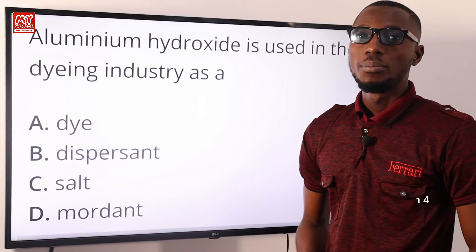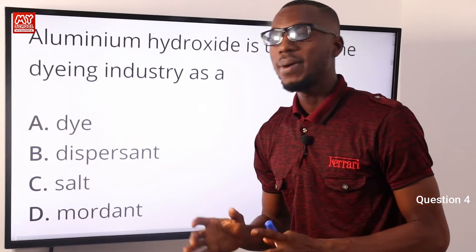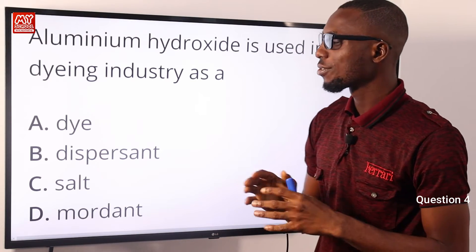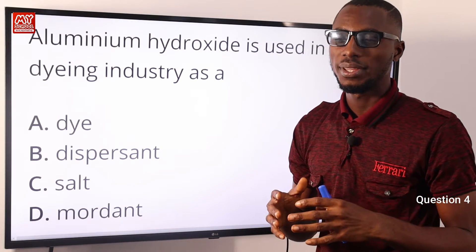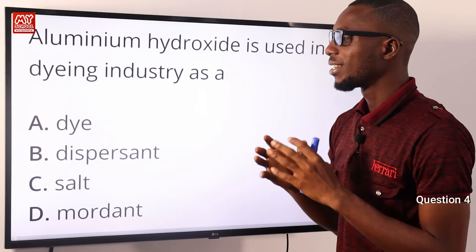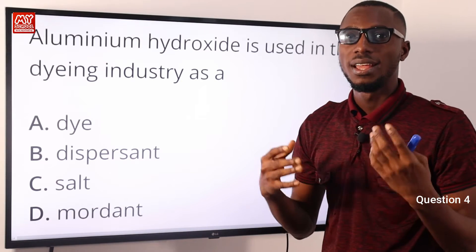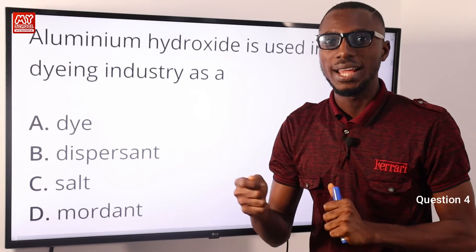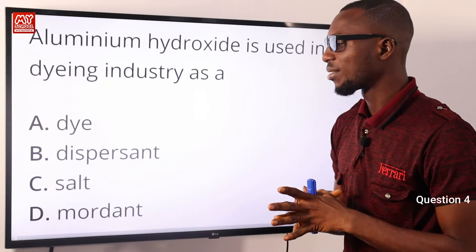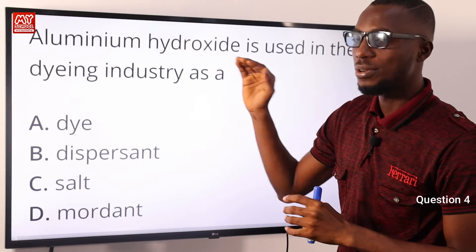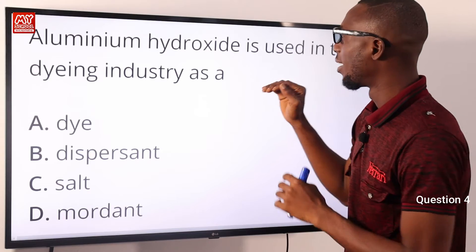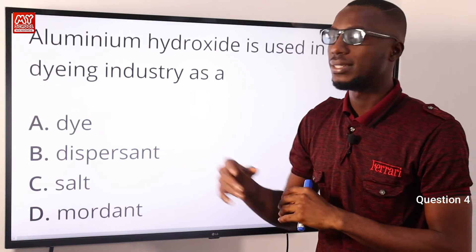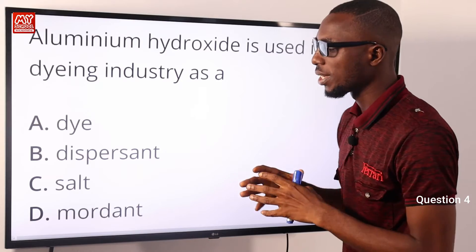Question four: aluminium hydroxide is used in the dyeing industry as what? It is used as a mordant. A mordant is any chemical that keeps dye in place — it allows it to stick. That is what aluminium hydroxide does in the dyeing industry. So the correct option is option D for mordant.